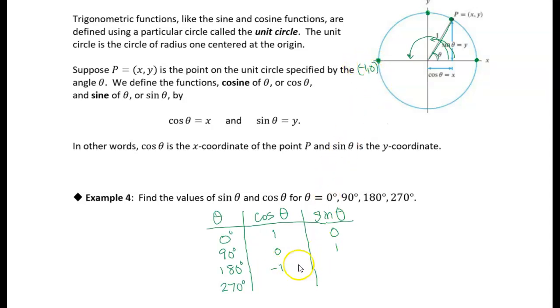All right, negative 1, 0, right? That's the x and the y-coordinate. x is the cosine, y is the sine, okay? So the cosine of 180 degrees is negative 1. The sine of 180 degrees is 0.